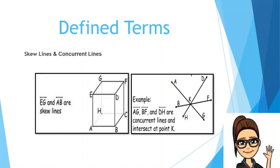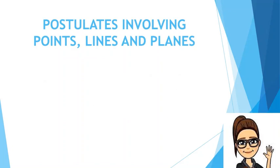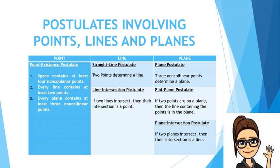These are the basic terms in geometry. Let's go to postulates involving points, lines, and planes. For points, we have the point existence postulate, which states: one, space contains at least four non-coplanar points — meaning those points are not on the same plane; two, every line contains at least two points.